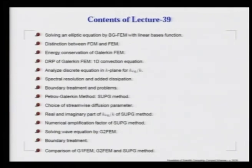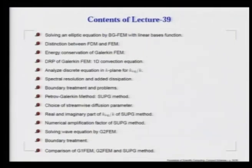We start Lecture 39 with our discussion on the Bubnov-Galerkin finite element method in solving an elliptic equation with linear basis function. When we go through the weak formulation, the spatial derivative term appears like a CD2 expansion. This has erroneously been pointed out by various people, but we want to state unequivocally that this Bubnov-Galerkin method provides a much better dispersion relation than the equivalent FDM.